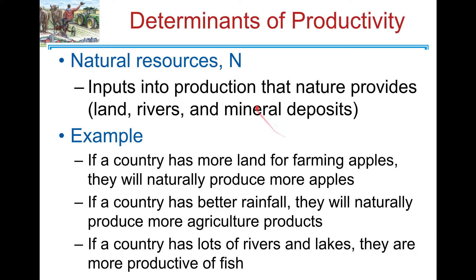A third factor that affects productivity is natural resources, which is denoted by the letter N. Natural resources are any input of production that's provided by nature for free, which includes land, rivers, and mineral deposits.